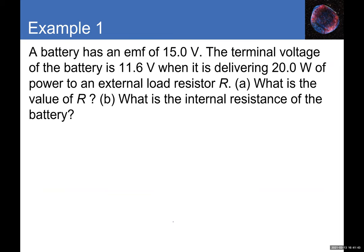Example: A battery has an EMF of 15 volts and a terminal voltage of 11.6 volts when delivering 20 watts of power to an external load resistor R. Find the value of R and the internal resistance of the battery. Since EMF and terminal voltage differ, there must be internal resistance dissipating some of the generated voltage.